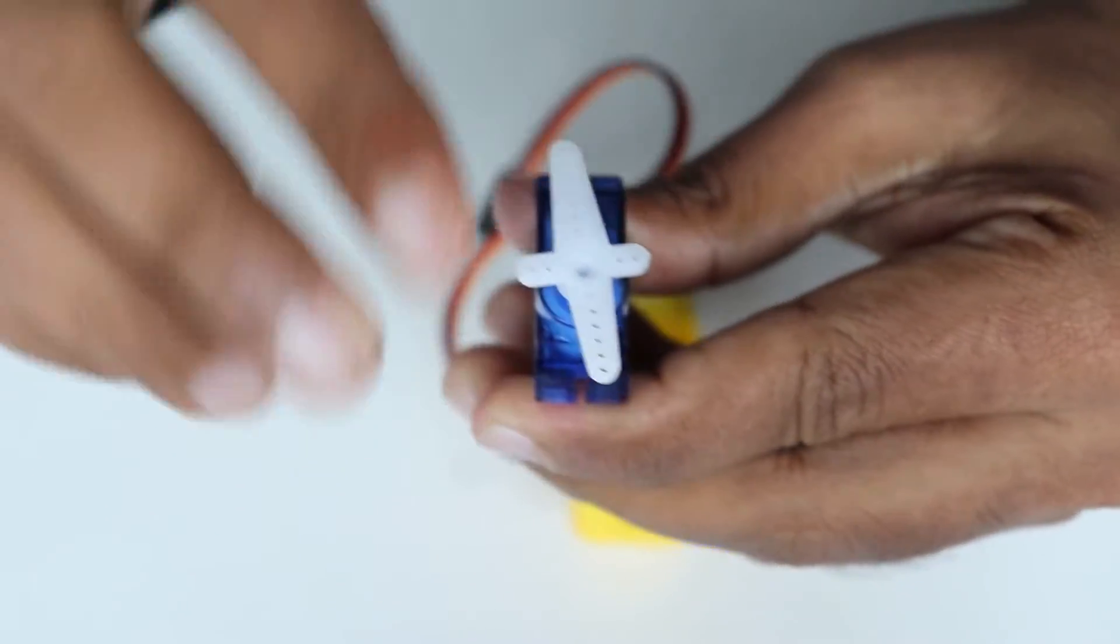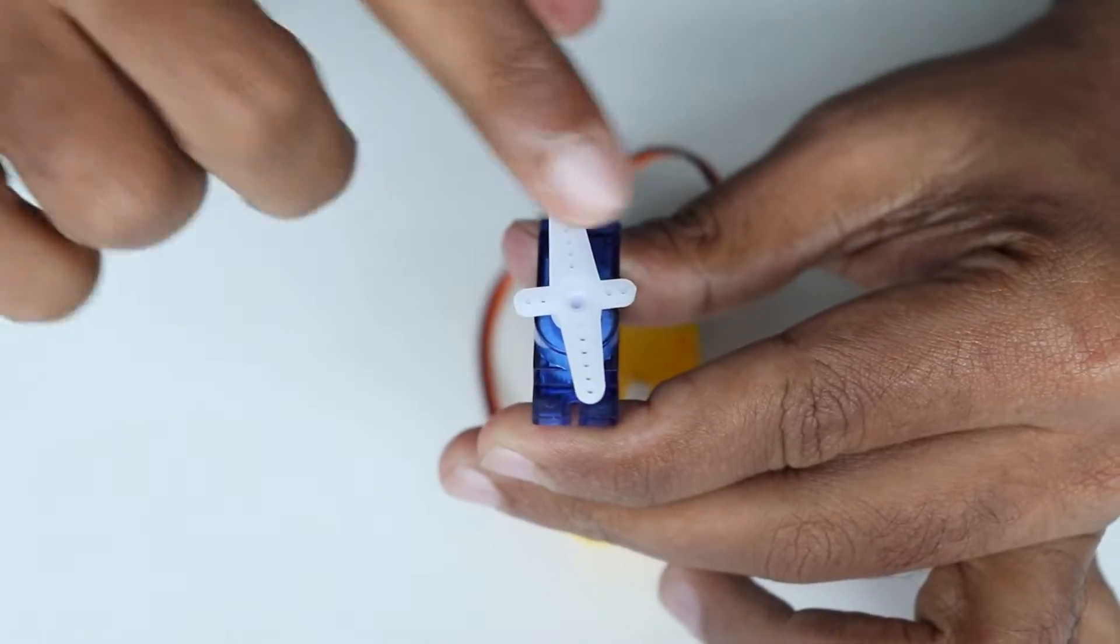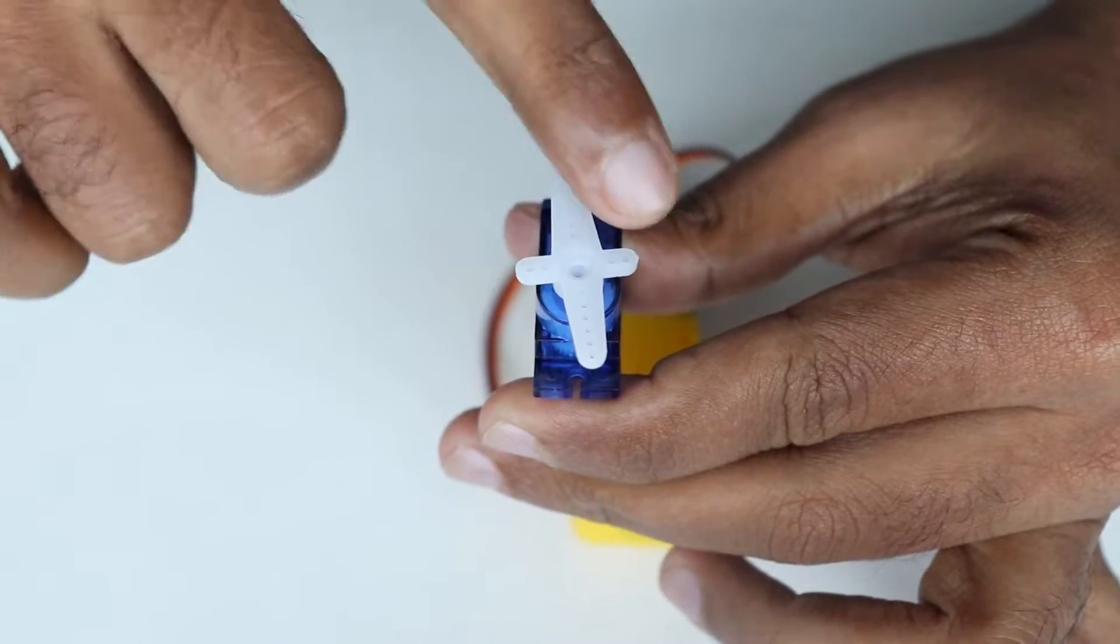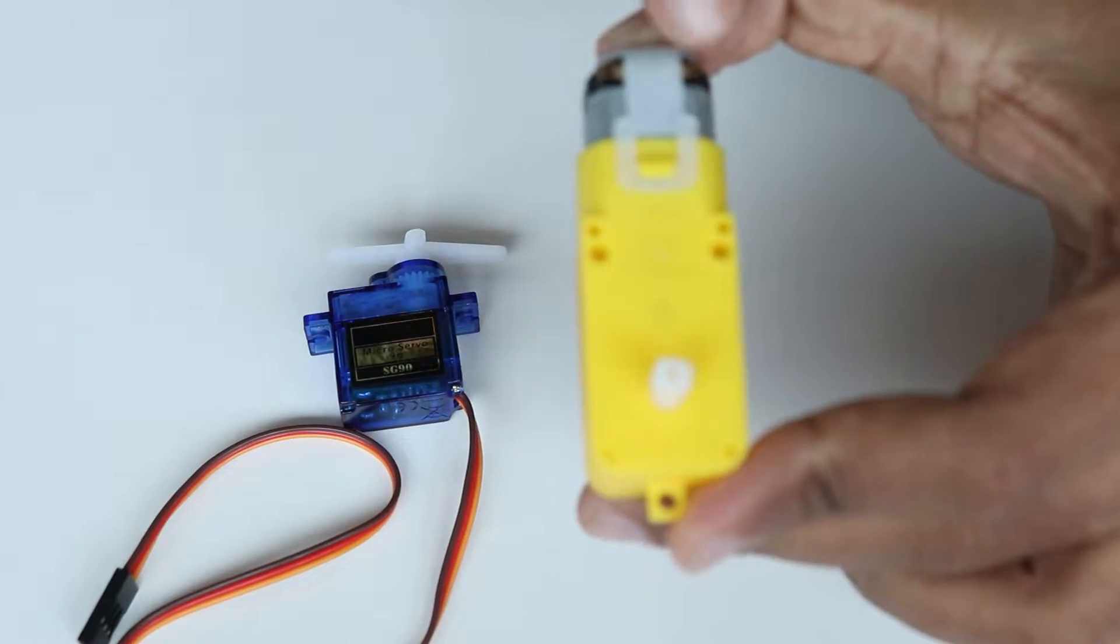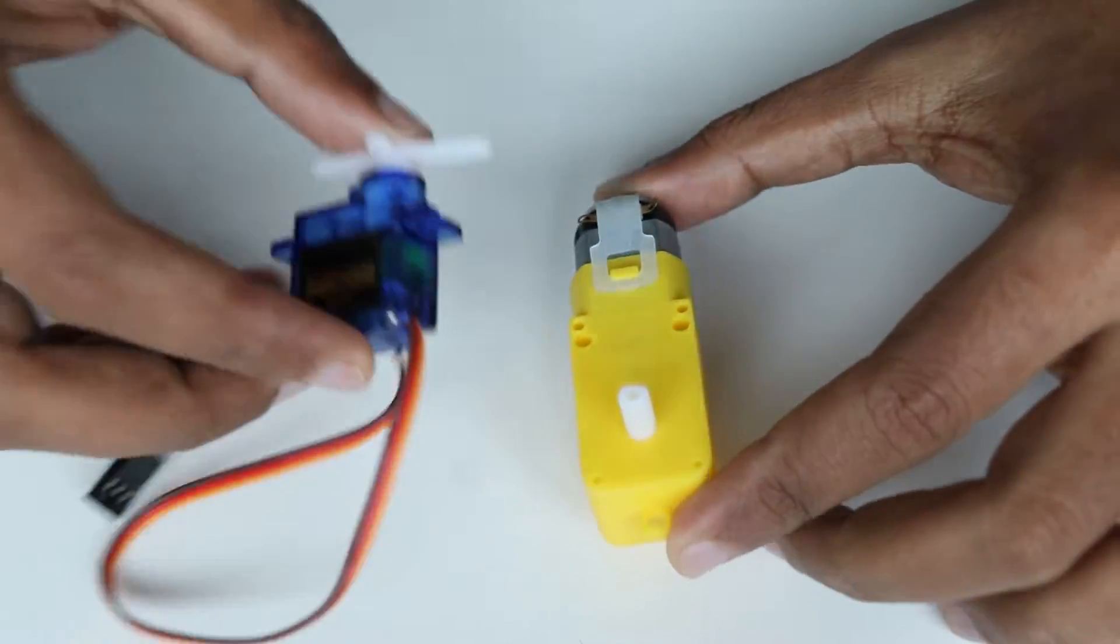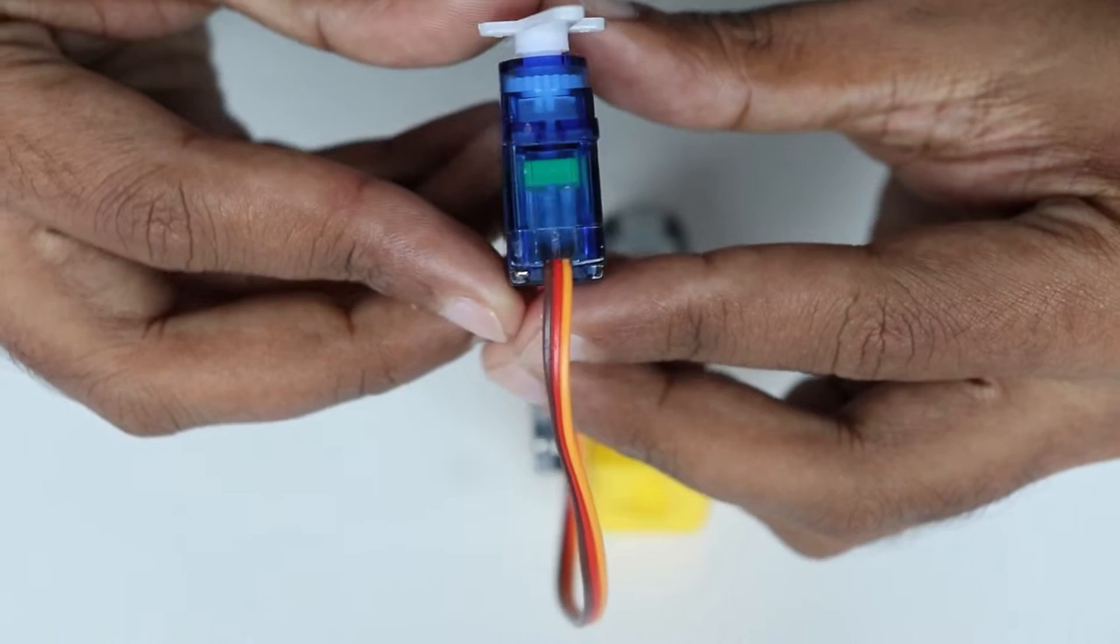Usually the servo motor will be able to rotate plus or minus 90 degrees, that is a total of 180 degrees. But modifications can be made to the circuit so as to rotate complete 360 degrees.